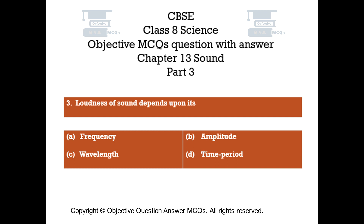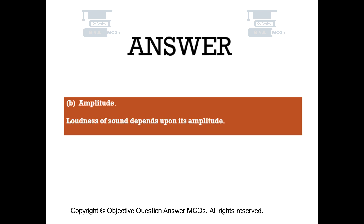Question number 3. Loudness of sound depends upon its: Option A – frequency. Option B – amplitude. Option C – wavelength. Option D – time period. The right answer is option B. Loudness of sound depends upon its amplitude.